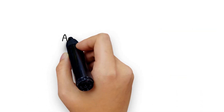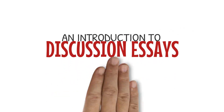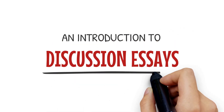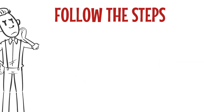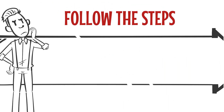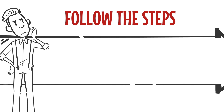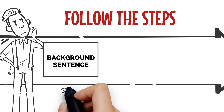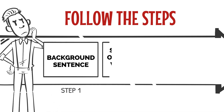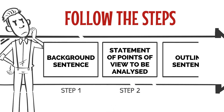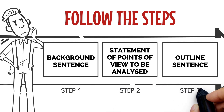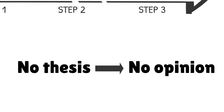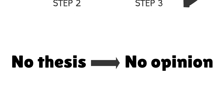Now let us look at the example of writing an introduction to discussion essays. While writing an introduction for discussion essays, you can follow this formula: a background sentence, a statement of points of view to be analyzed, and an outline sentence. As you can see, when you write discussion essays there is no thesis, which means you don't have to give your opinion in the introduction.